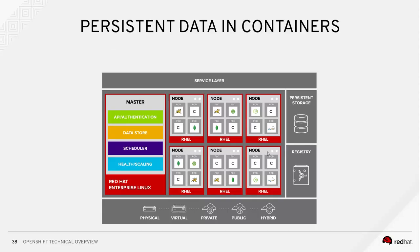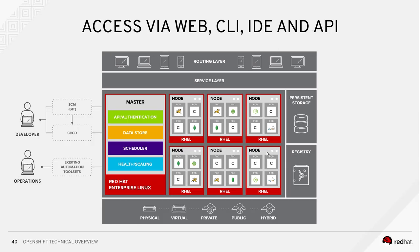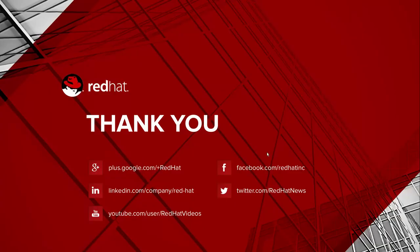We give you a persistent volume store by default, outside of it, usually with Ceph or Gluster depending on your choice, and that is HA. Routing and load balancing we also handle. You also have the ability to access OpenShift via the web, the CLI, an IDE, and an API for your developers and operations folks. That's it in a nutshell - there's like 100 more slides and I'm not going to do this to you all. That was literally a minimum of an hour's content in about 15 to 20 minutes.